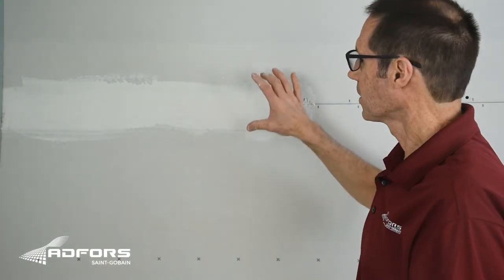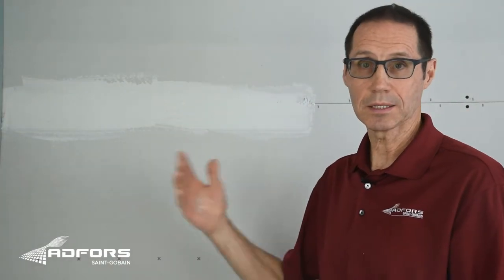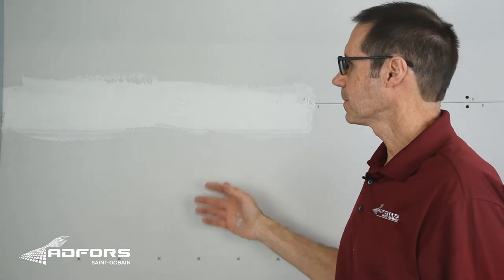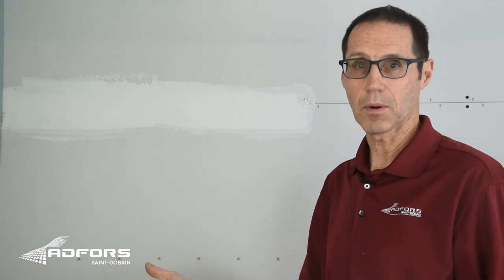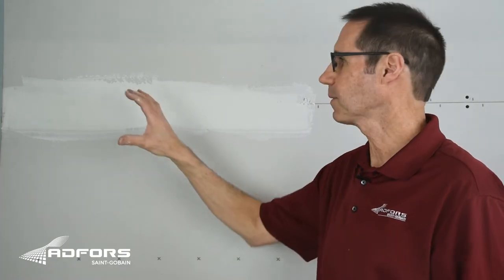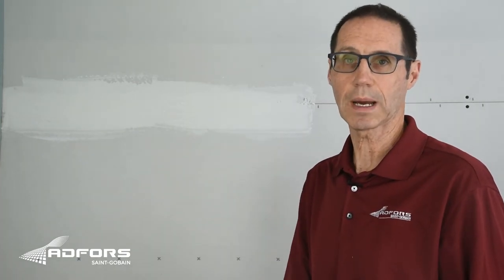All right, we have the perfect finish tape embedded in joint compound. Typically, you would wait for this to dry before you apply your fill coat. I'm not going to wait. I'm actually going to apply the fill coat now just so I can show you how to do it.